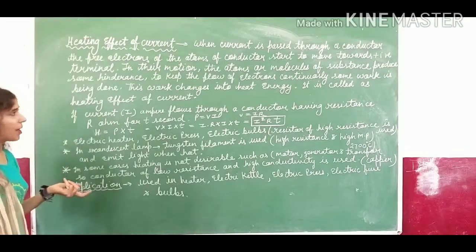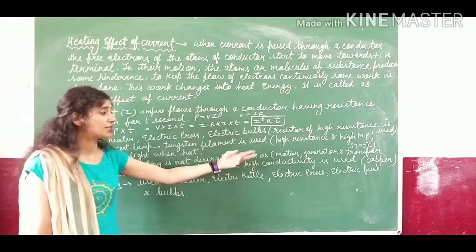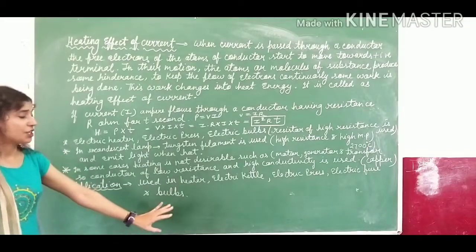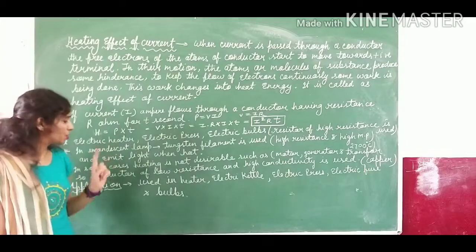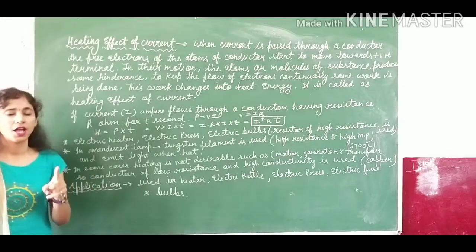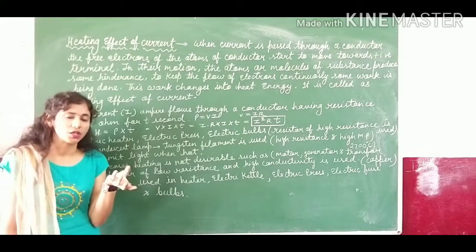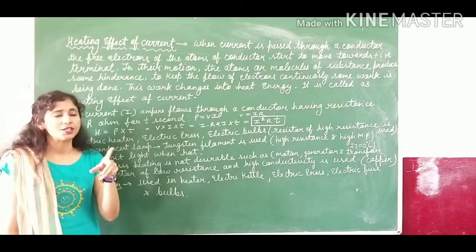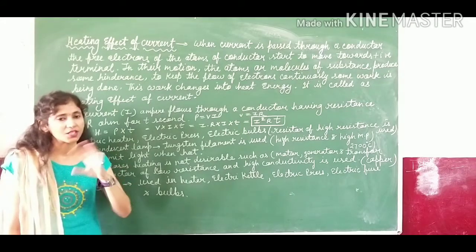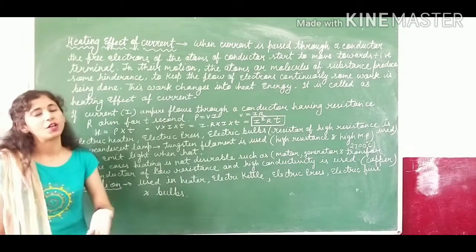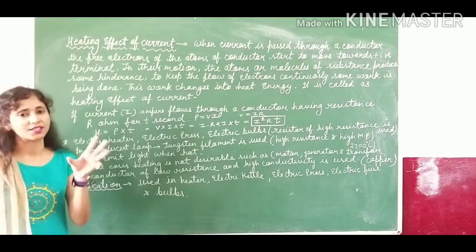Some applications of the heating effect of electric current include the electric heater, electric press, electric fuse, and the electric bulb. The electric fuse also works on the heating effect of electric current. Whenever the current supply becomes too high, the electric fuse melts and breaks. The reason is that its melting point is low, so whenever the excess current creates heating, the fuse heats up, melts, and breaks the circuit to protect the connected apparatus.